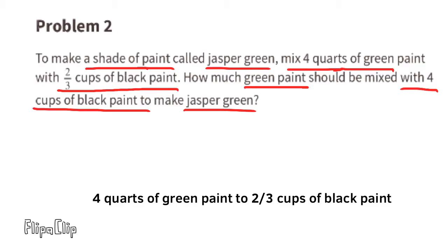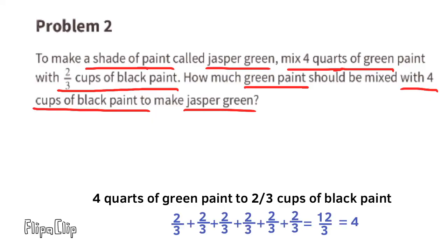We need to figure out how many two-thirds cups of black paint fit into four full cups of black paint. Two-thirds times six equals twelve-thirds, or four — so two-thirds goes into four exactly six times. Since for every two-thirds cup of black paint there are four quarts of green paint, four quarts times six equals 24 quarts of green paint.